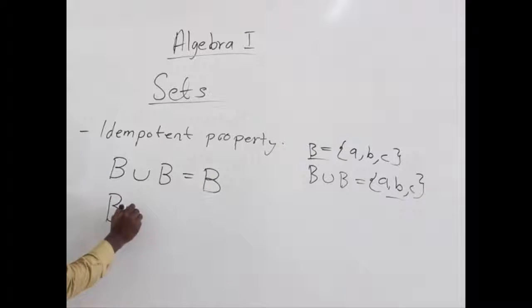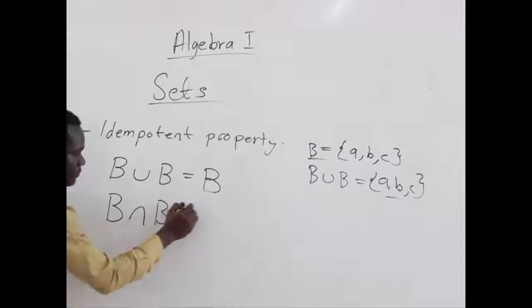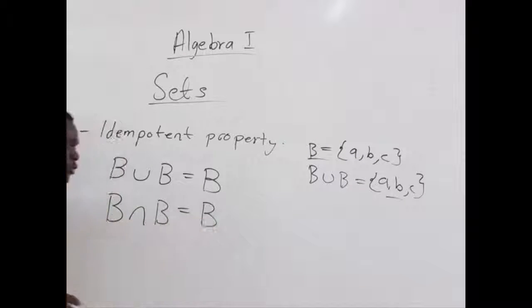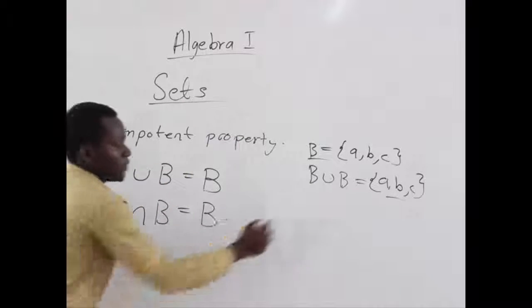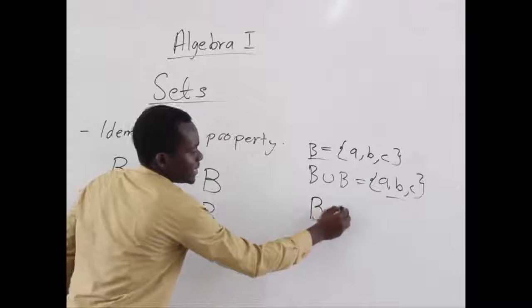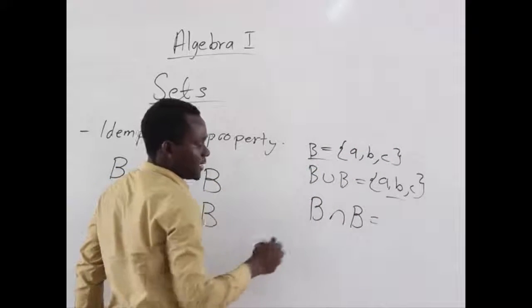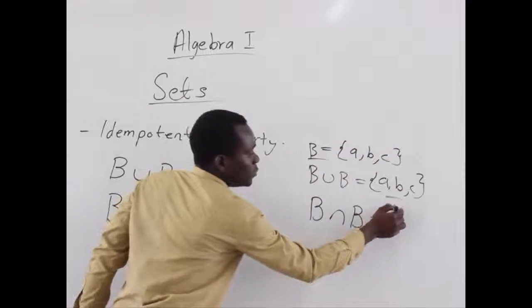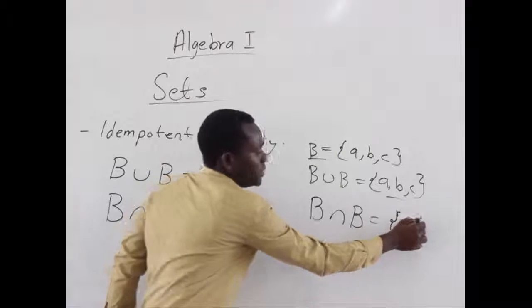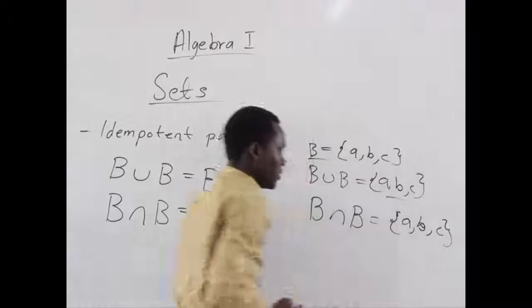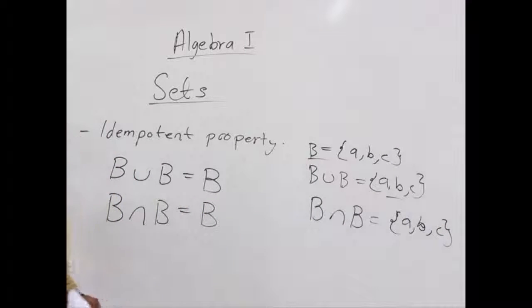Also, when you are finding the intersection of a set with itself, you are going to produce the same set. Taking this same view, when you want to find B intersection B, since they have the same members, the intersection B will still be A, B, and C. And that's what the idempotent property tells us. So, this is the new thing I'm going to introduce you to on properties of sets.